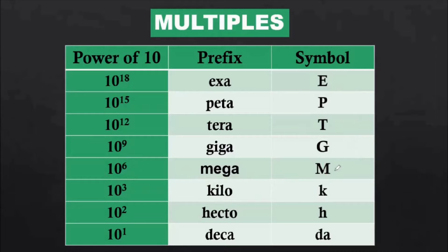So 10 power 6: mega, capital M. 10 power 9: giga, capital G. 10 power 12: tera, capital T. 10 power 15: peta, capital P. 10 power 18: exa, capital E. You may be wondering how are you going to use them.